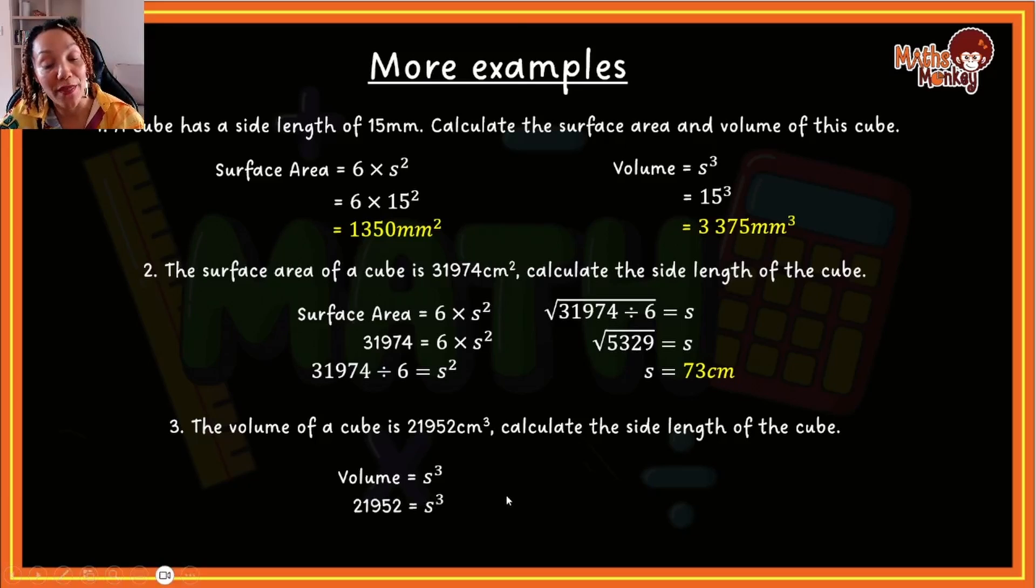So the volume is 21,952. But now we are looking just for s. So we then cube root both sides, right? And that will then give us s is equal to 28 centimeters. So if I were to calculate the volume of a cube that had a side of 28 centimeters, then this would be the volume. Okay.